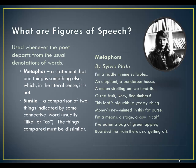There are two main figures of speech that poets use. There's metaphor, which is a statement that one thing is something else directly, which in the literal sense it's not. And there's simile, which is a comparison of two things indicated by some connective word, usually the words 'like' or 'as.' And the two things that are being compared are usually dissimilar in some way.